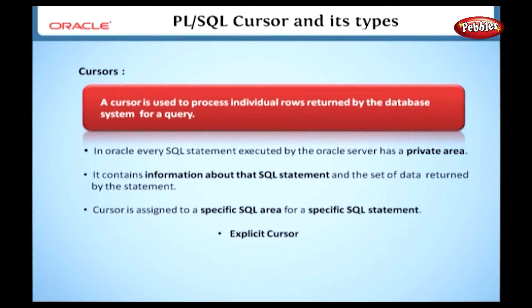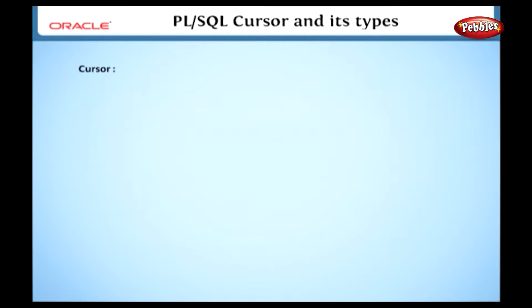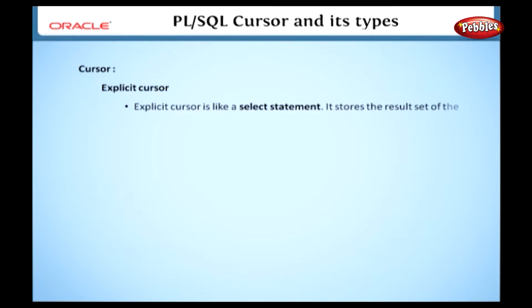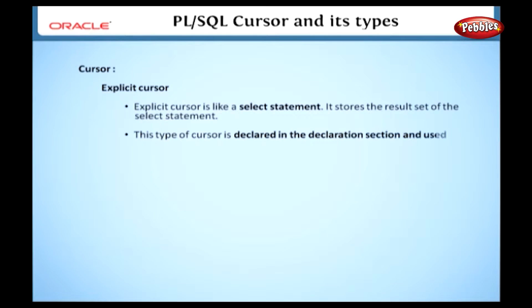There are two types of cursors: EXPLICIT CURSOR and IMPLICIT CURSOR. The EXPLICIT CURSOR is like a SELECT statement — it stores the result set of the SELECT statement. This type of cursor is declared in the DECLARATION section and used in the EXECUTION section.